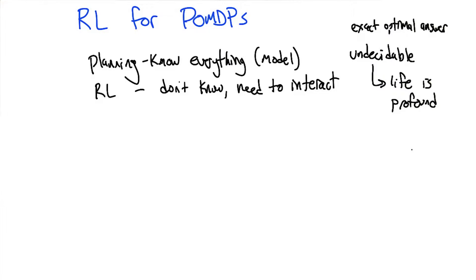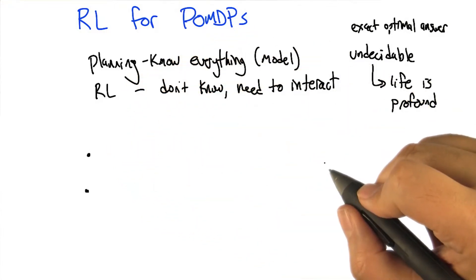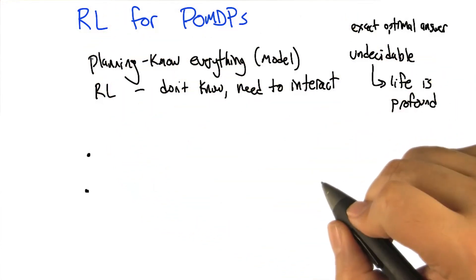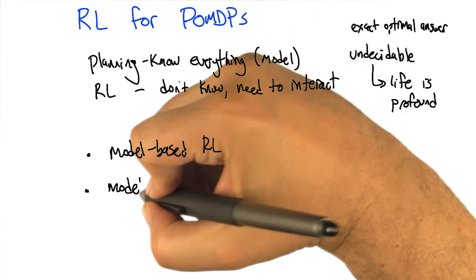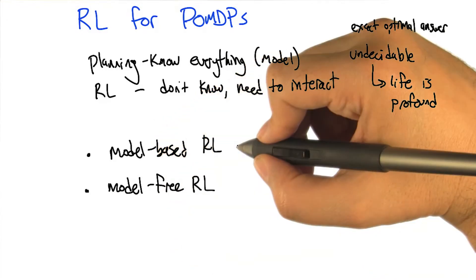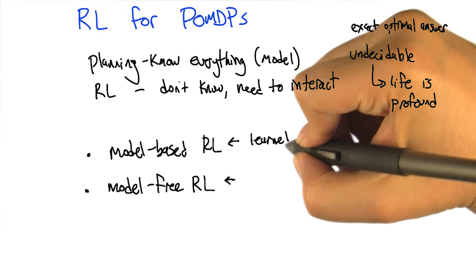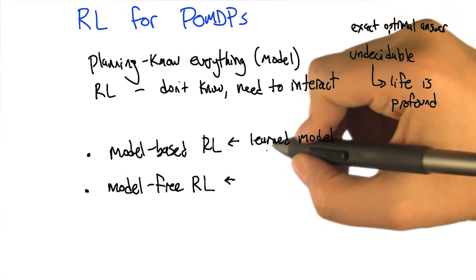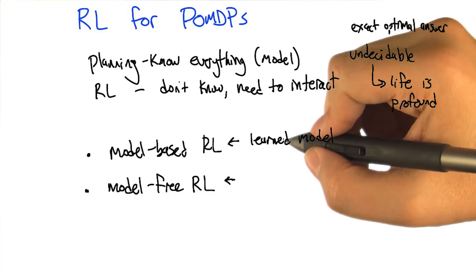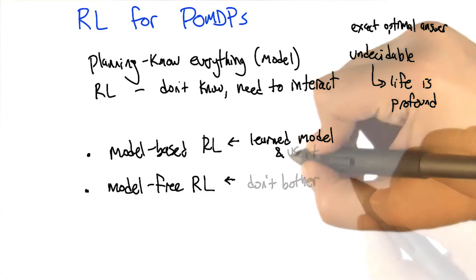Do you remember we had two main flavors of reinforcement learning algorithms for MDPs? There's value iteration and policy iteration — those are planning algorithms. But for reinforcement learning in an MDP, the two main branches are model-based RL and model-free RL. One learned a model and one didn't. You can't use a model if you don't learn it. So you learn a model and then use it, versus don't bother to learn a model and just do it.